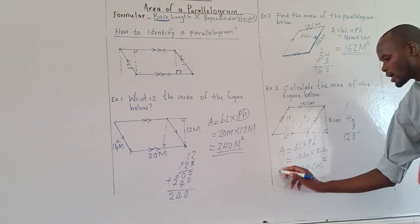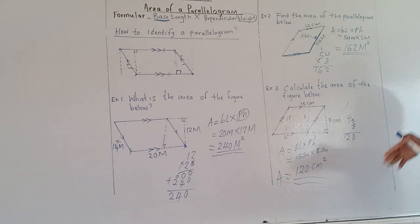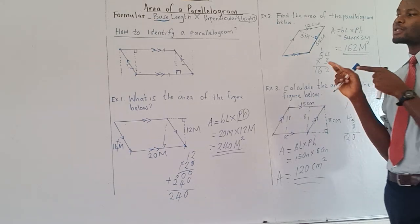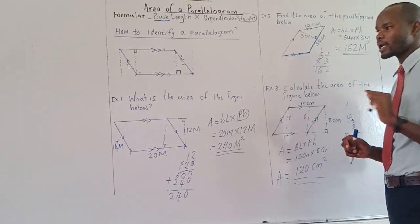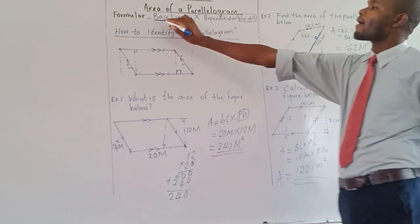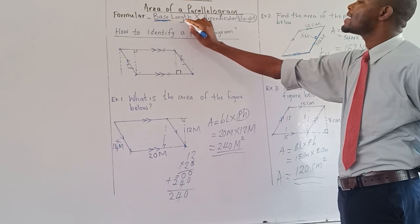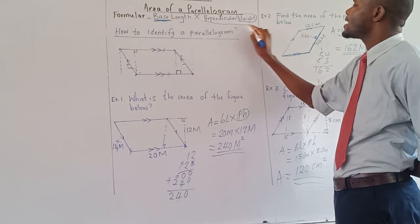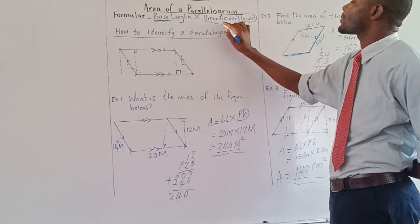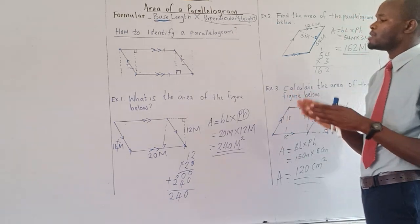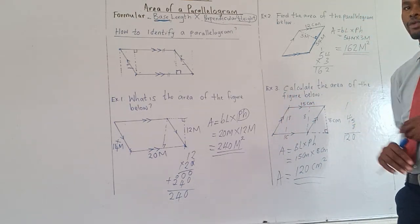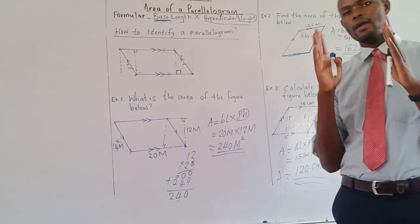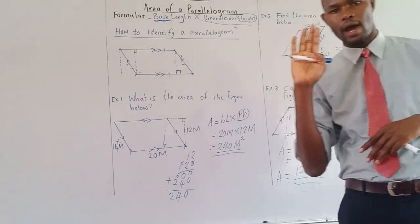That is our area. So the first thing is to know how you identify the figure — that is a parallelogram. If you find your figure is a parallelogram, you use this formula: base length times perpendicular height. Remember the base length and perpendicular height must meet at 90 degrees. Thank you very much for watching. Be blessed. Bye bye.